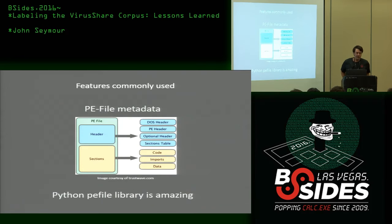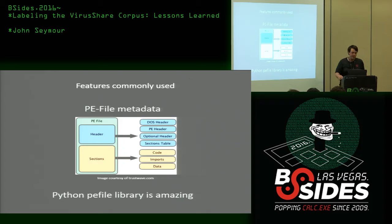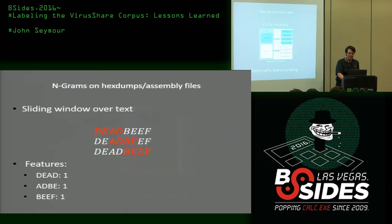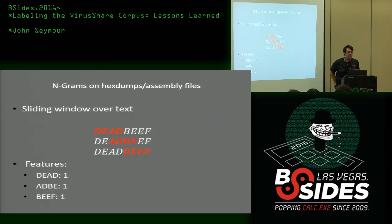Some of the features commonly used in this domain: PE file metadata, which is basically things inside your executable that tell Windows how to run it — there are headers and sections rich with data, and there's an excellent Python library called pefile for scraping all this. Another commonly used feature are n-grams: if you think about a sliding window over text, every two-byte sequence in the executable — you count those up and use that as features. For example, in DEADBEEF, DEAD, ADBE, and BEEF are all two-byte n-grams, each with a count of one. This was mainly used during the Kaggle competition since they had stripped the useful information out of the files.